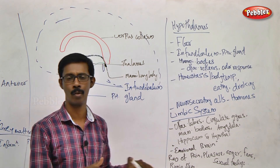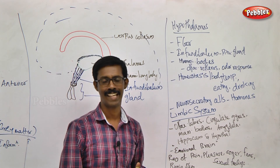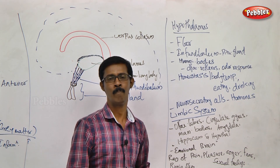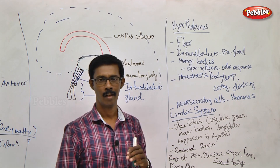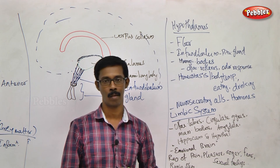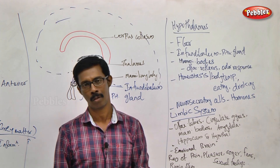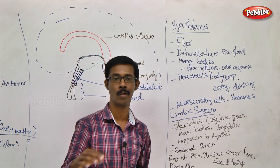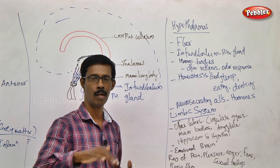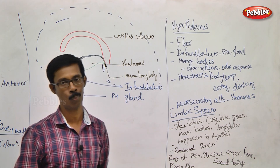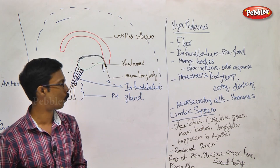Hypothalamus maintains body temperature homeostasis and plays a major role. It contains the satiety center — controlling hunger, thirst, eating, and drinking. These are regulated by the hypothalamus. When eating and drinking reach a normal optimum level, homeostasis is maintained. So body temperature, eating, and drinking are all regulated by the hypothalamus.